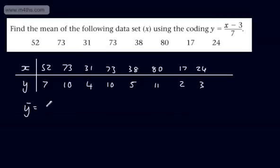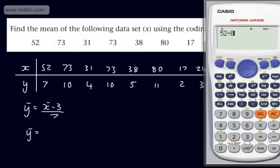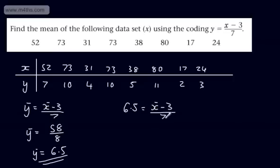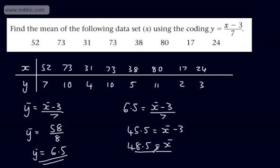We can say that Ȳ = (X̄ − 3) / 7. So I'm going to find Ȳ by adding all the coded values and dividing by how many there are. Adding them up: 7 + 10 + 4 + 10 + 5 + 11 + 2 + 3 = 52, divided by 8, gives 6.5. Therefore Ȳ = 6.5. To find X̄, we work backwards: 6.5 = (X̄ − 3) / 7. Multiplying both sides by 7 gives 45.5 = X̄ − 3. Adding 3 to both sides, X̄ = 48.5, which is the mean of the original data set.